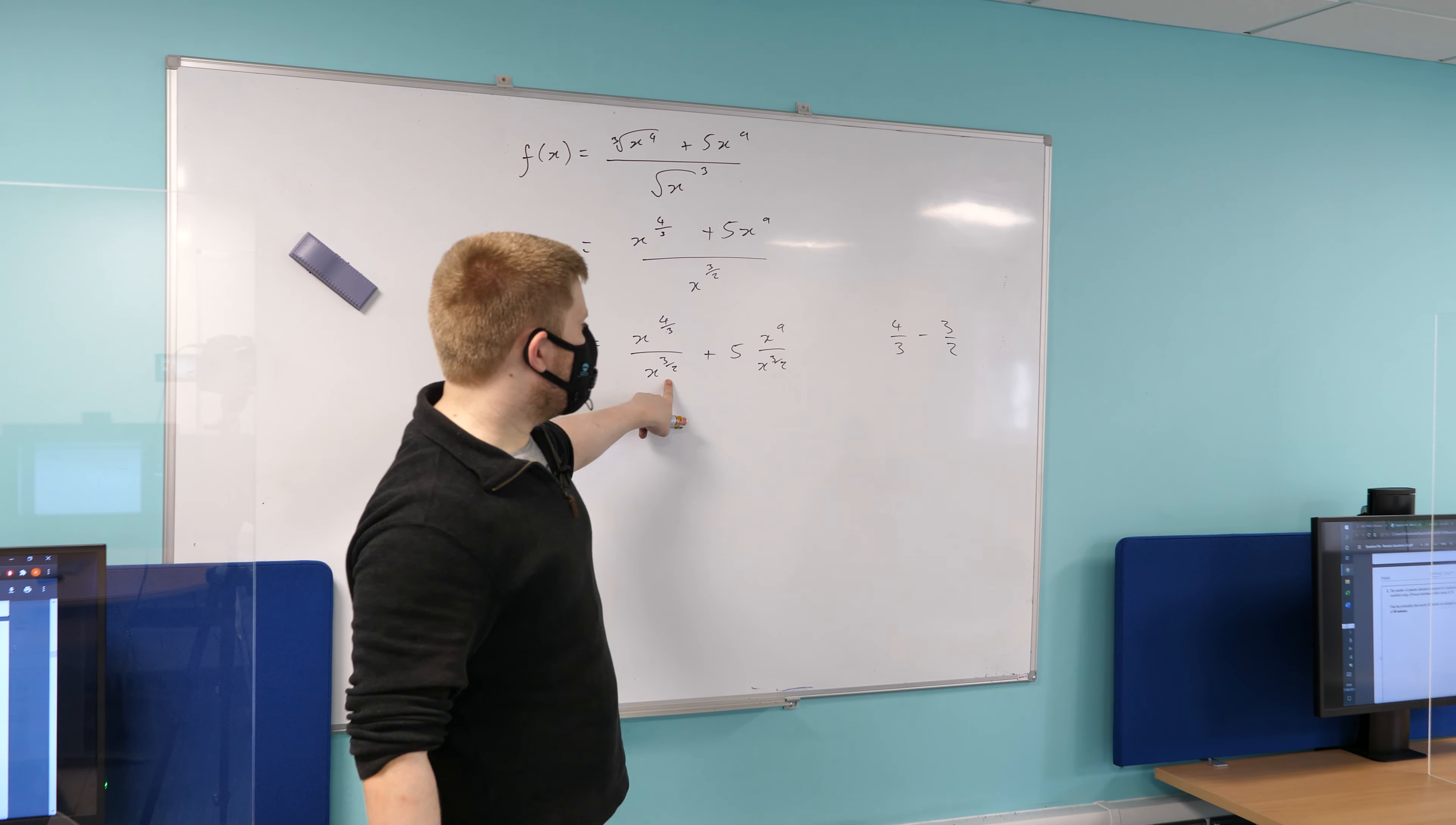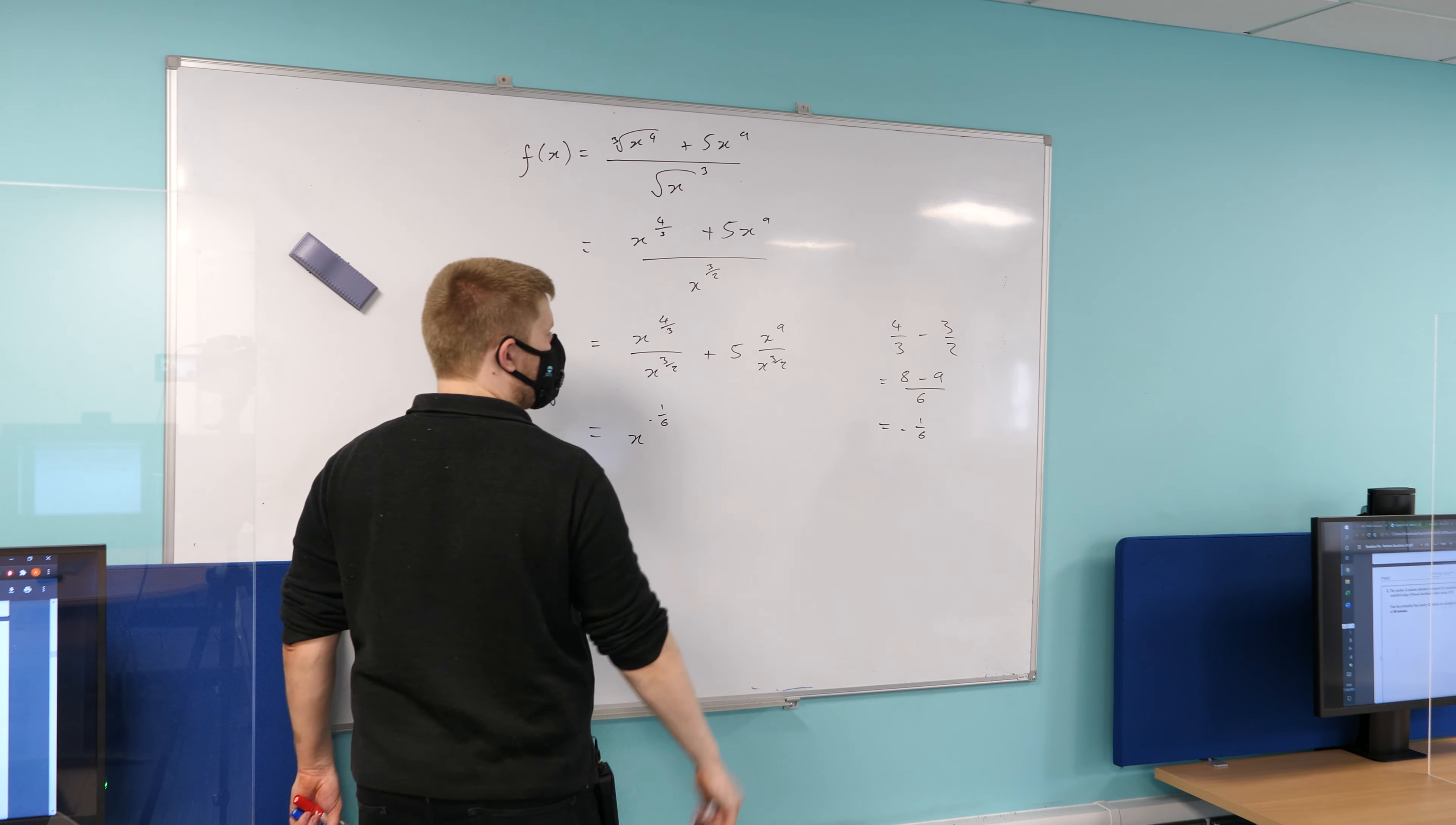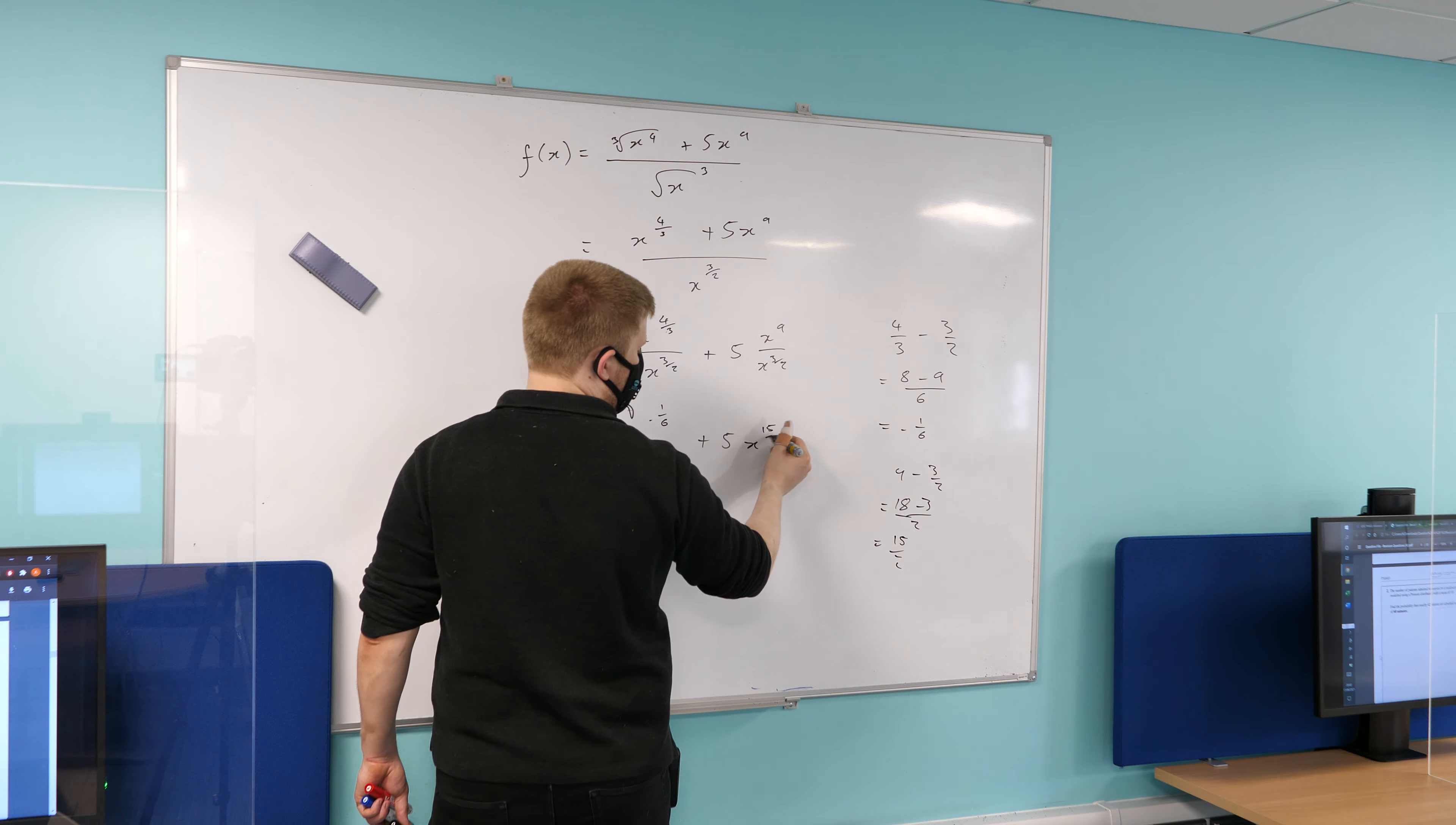So if I just subtract the powers here, 4 over 3 subtract 3 over 2, I guess you can find a common denominator of 6. So that's going to become 8 minus 9, yeah I think, over 6. So it's going to be negative a sixth. Is that right? Yep. So this first one is going to become x to the power of negative one sixth. And the second one, well, I'll leave the 5, but let's think about what 9 subtract 3 over 2 is going to be. Well, okay, that's 9 over 1, so if you times that by 2, it's going to become 18 minus 3 over 2, which is going to become 15 over 2. So it becomes 5x to the power of 15 over 2, right?